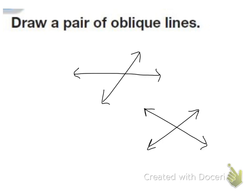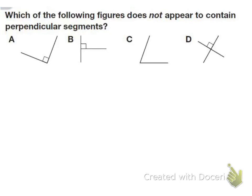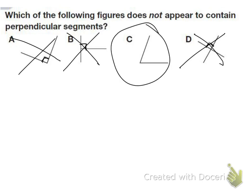Which of the following figures does not appear to contain perpendicular segments? Remember perpendicular segments form a square corner. We can see that A has a square corner so it's not that one. B has a square corner so it can't be that. And D has a square corner, so the only figure that does not have perpendicular segments is C.